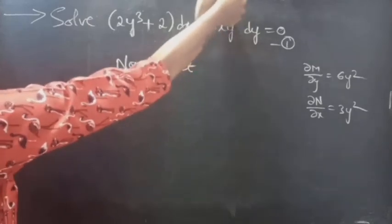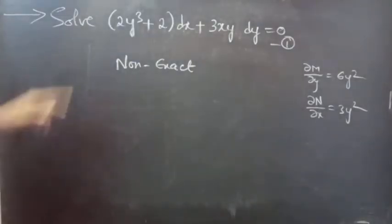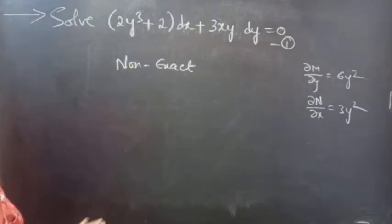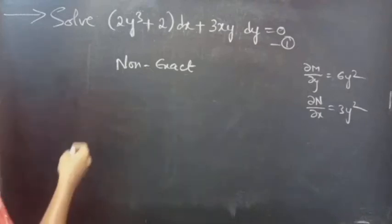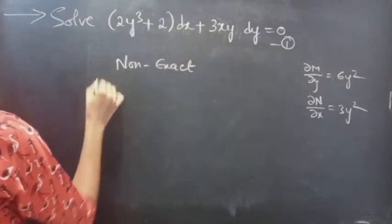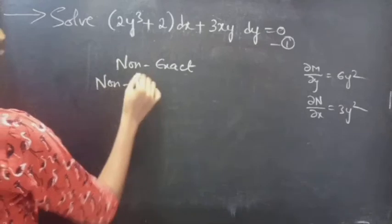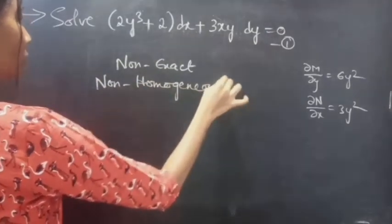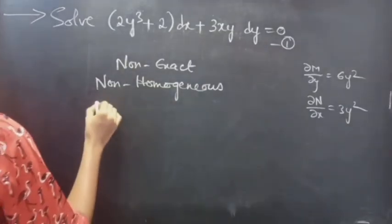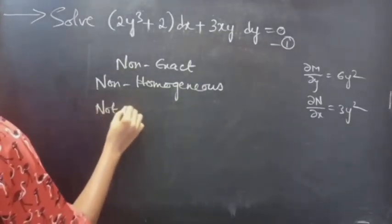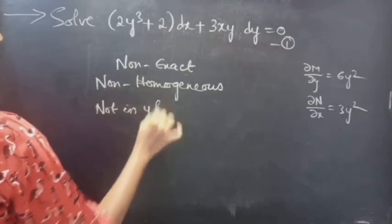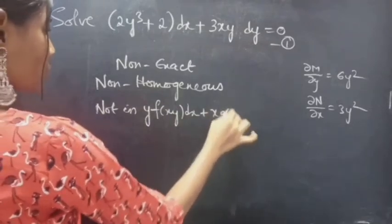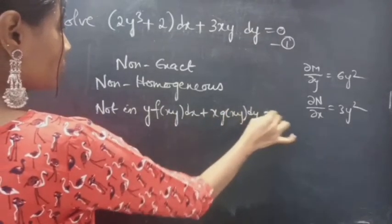We need to get equal, same powers. If each term has the same powers, then we can say that it is homogeneous. So the given equation is non-homogeneous and it is also not in the form y·f(xy)·dx + x·g(xy)·dy = 0.